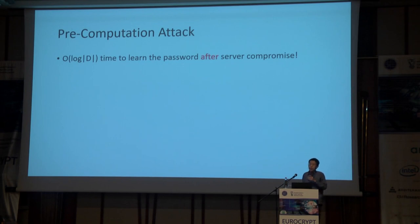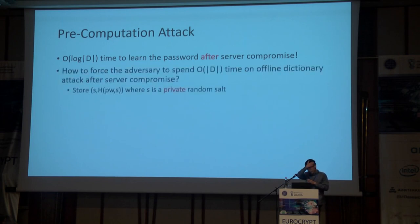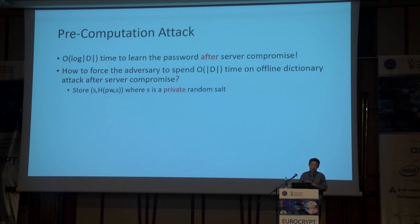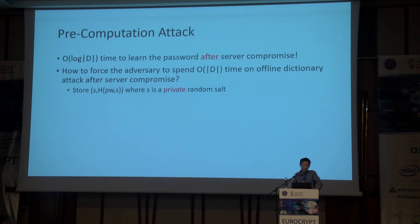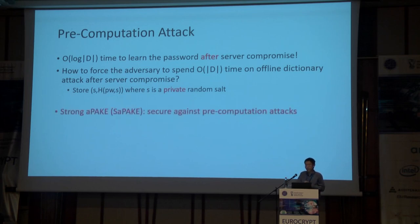In a pre-computation attack, after compromising the server the adversary only needs time logarithmic in the dictionary size, because it only needs to perform a binary search. A natural question is: how can we force the adversary to perform a full offline dictionary attack — taking dictionary-size time — after server compromise? The basic idea is that the server should store a private random salt along with a hash of the password and the private random salt. Pre-computation attacks are eliminated because the adversary doesn't know the private random salt before compromising the server. This is called strong APAKE.